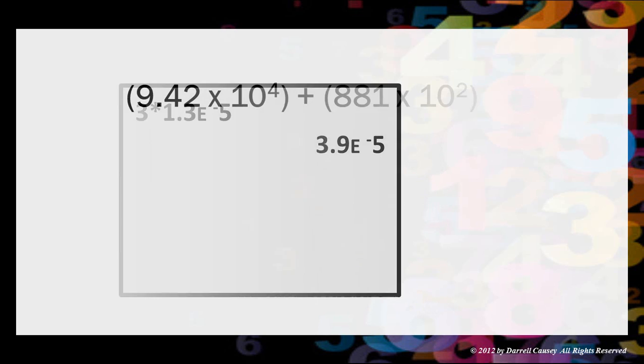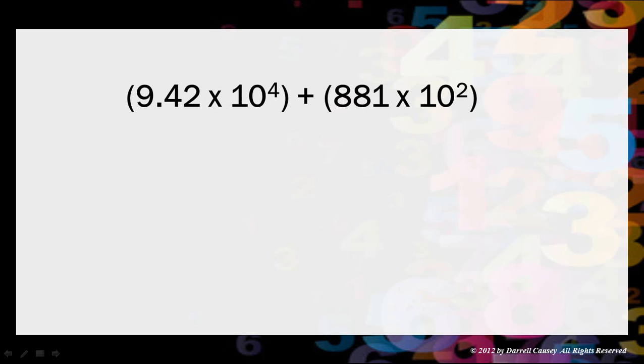Let's try another one. 9.42 times 10 to the 4th, plus 881 times 10 to the 2nd power. Now in the old days we would have to adjust all this, have it to the same power, and then add them. But with a calculator we don't have to do that.